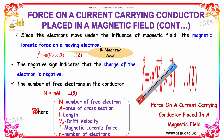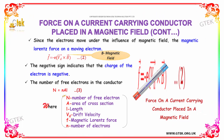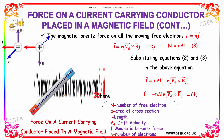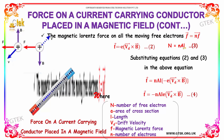The number of free electrons in the conductor is equal to N·A·L. Substituting these values in the equation, we get F vector is equal to N·A·L × (minus e) × VD vector × B vector. So, F vector is equal to minus N·A·L·e·VD vector × B vector.